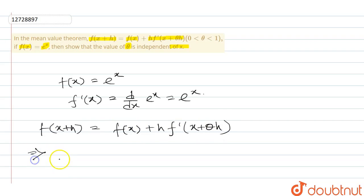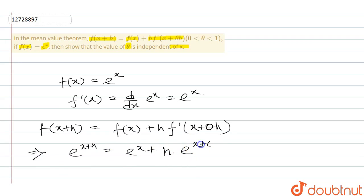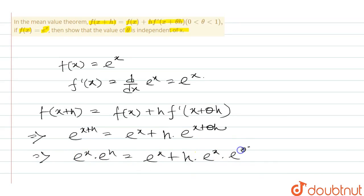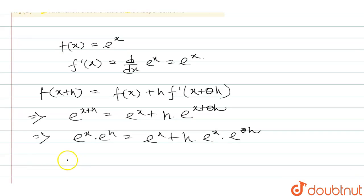f of x plus h: e to the power of x plus h equals e to the power of x into e to the power of h. Then f dash of e to the power of x, then e to the power of x plus theta h. So e to the power of x into e to the power of h, and e to the power of x plus h into e to the power of x into e to the power of theta h.